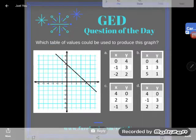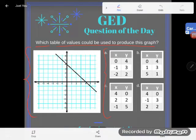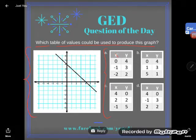Let's take a look. It says which table of values could be used to produce this graph. Here's the graph, here's my tables of values.